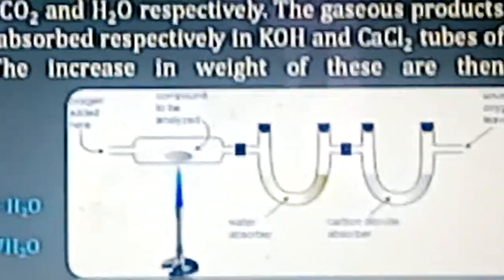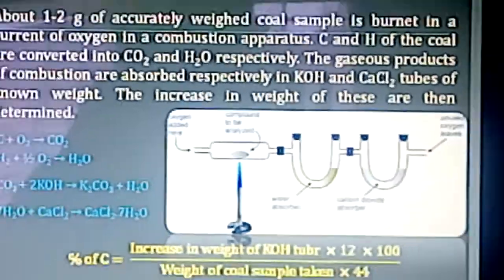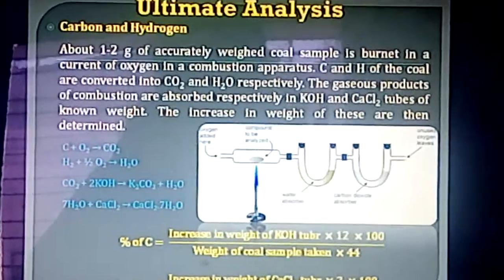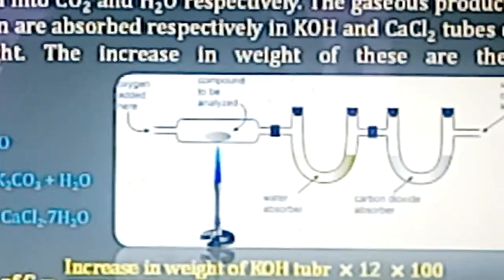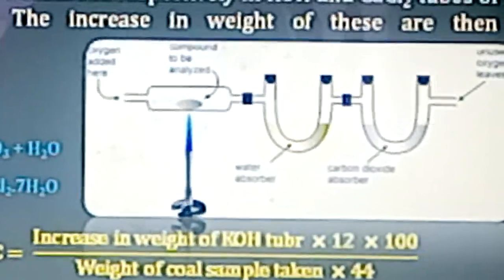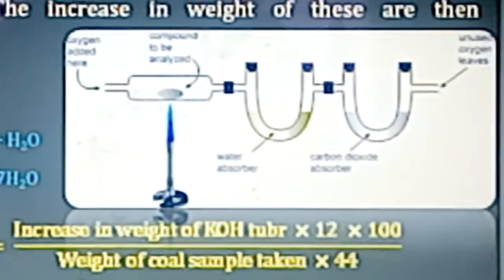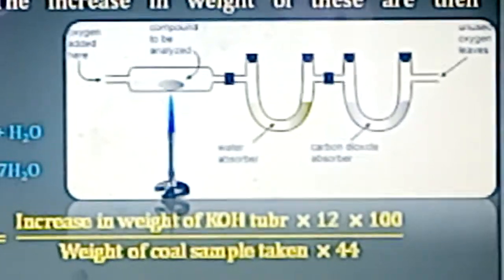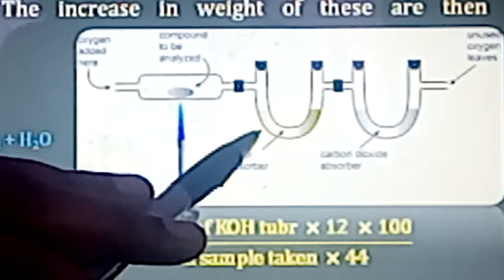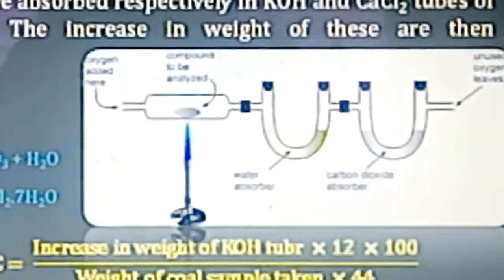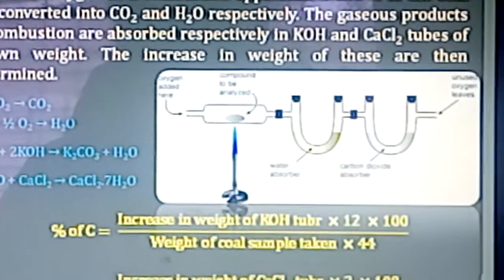The procedure is very simple. A known quantity of coal is taken into the crucible and placed into the combustion tube for heating. Pure and dry oxygen is passed through one side of the combustion tube, which sweeps out CO₂ and H₂O vapor from the combustion tube. The liberated water vapor is absorbed by CaCl₂ and CO₂ is absorbed by KOH solution. From the increase in weight of the CaCl₂ and KOH U-tubes, we can find out the percentage of carbon and percentage of hydrogen.